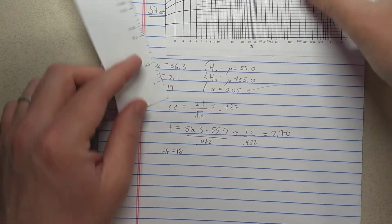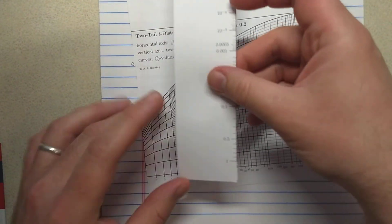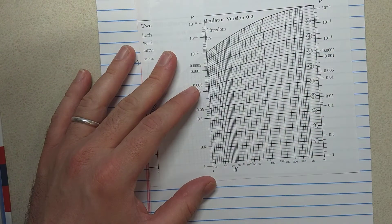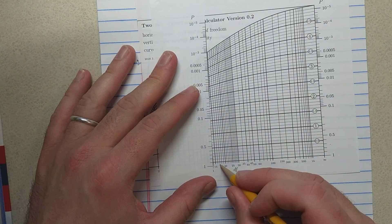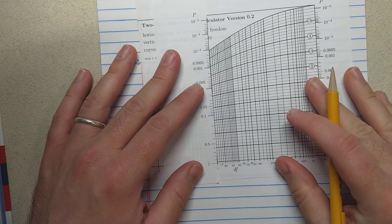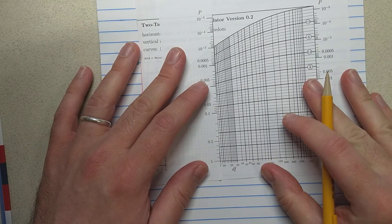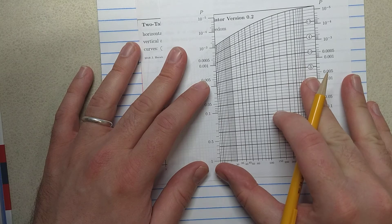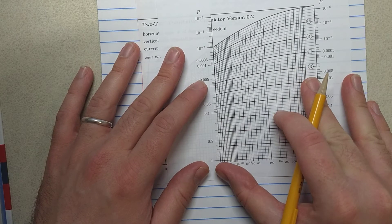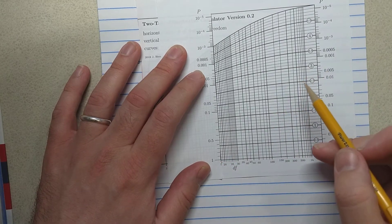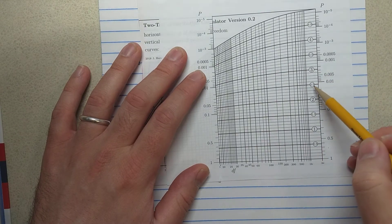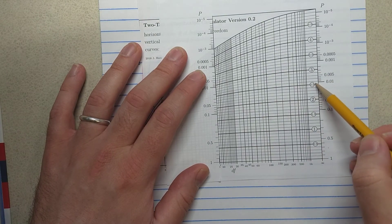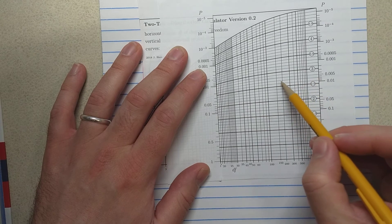Let's look up the p-value using the chart. All right, so here I have 15, 16, 17, 18 right here. So I'm going to line this up. Then what I'm going to do is find my 2.7 line. So 2.5, 2.6, 2.7, this line.